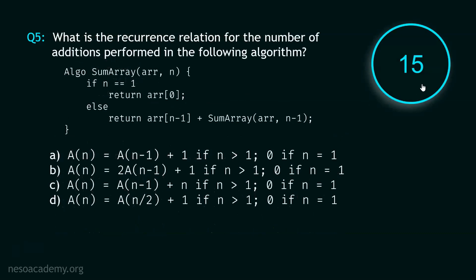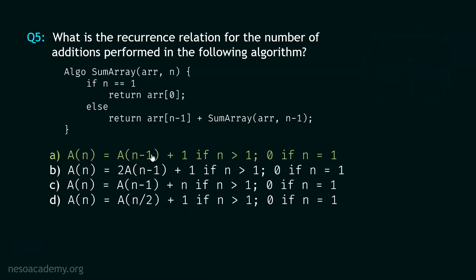Now let's move to question number 5, and your time starts now. Stop. The correct option is option A. Clearly we are performing one addition here, and no additions at all in the base case — so this must be 0 and this must be 1. We represent the number of additions by A(n) for this algorithm, so the number of additions required for array ARR[n-1] will be A(n-1). Option A is the correct option.